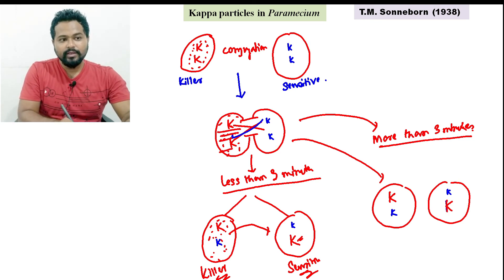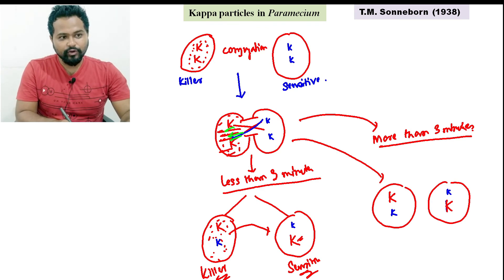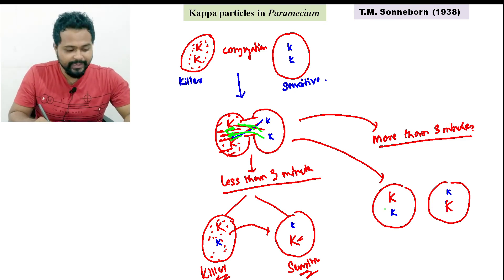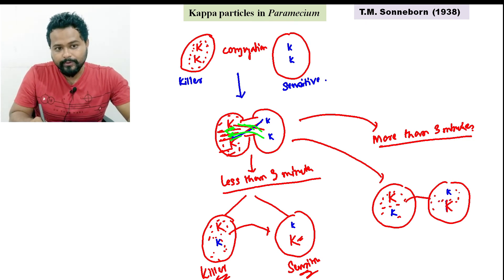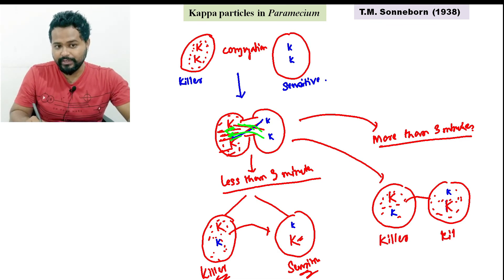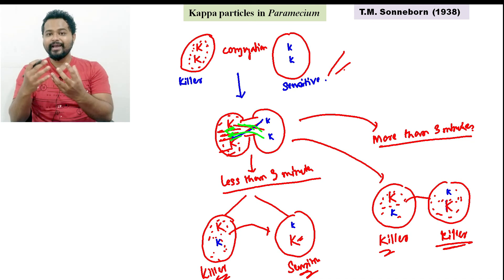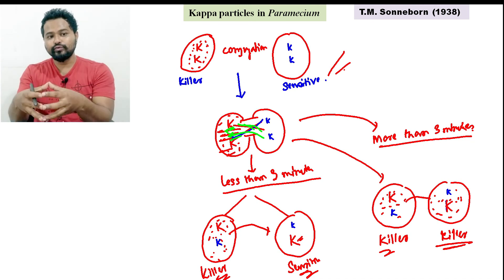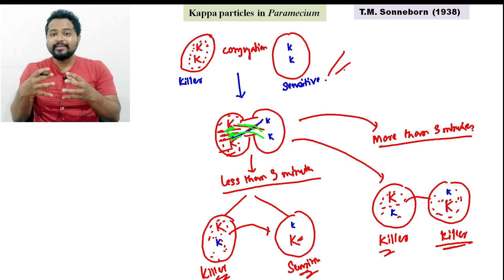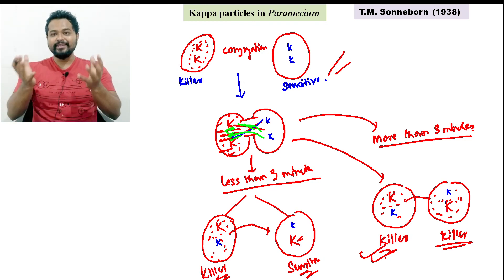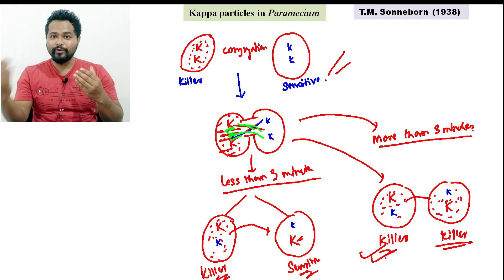If conjugation is for more than three minutes and kappa particles are transferred, those kappa particles — however many are transferred — allow the strain to act as a killer strain. So a strain that was originally sensitive, if conjugation is allowed for more than three minutes, the sensitive strain transforms into a killer strain.